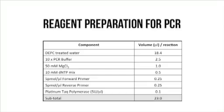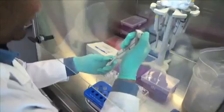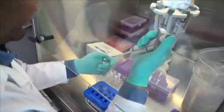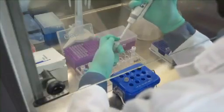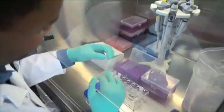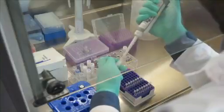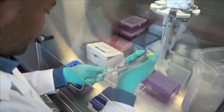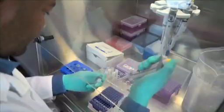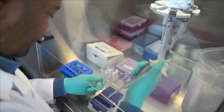Add the water, 10x buffer, magnesium chloride, DNTPs and primers in the amounts shown on the table and vortex. Add 0.1 microliters of platinum Taq polymerase and gently mix. Aliquot 23 microliters of the master mix to 200 microliter PCR tubes. With the master mix tubes on a cold block, move to the PCR room.